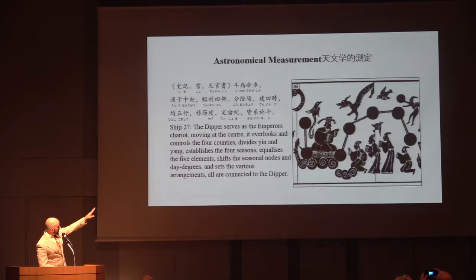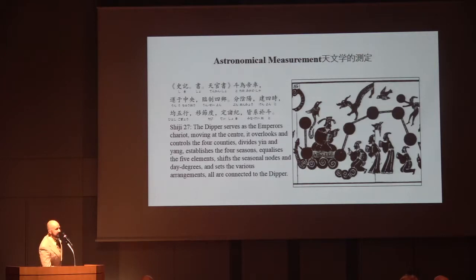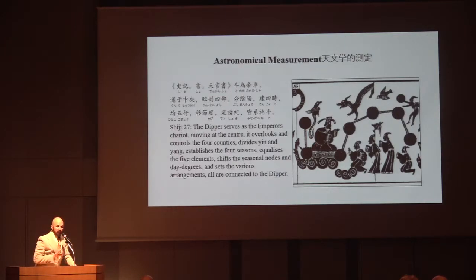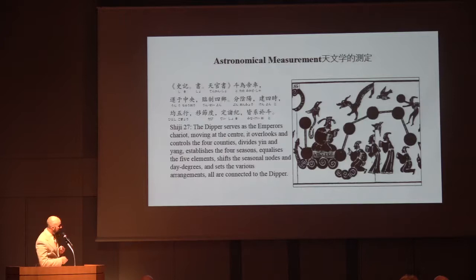Here we have the image of the dipper as the celestial chariot: 'The dipper serves as the emperor's chariot. Moving at the centre, it overlooks and controls the four counties, divides yin and yang, establishes the four seasons, equalises the five elements, shifts the seasonal nodes — the jiechi — and the day degrees — the du — and sets the various arrangements. All are connected to the dipper.' If there's one constellation you should learn if you're practising feng shui, it is the Northern Dipper. It is the single most important constellation in feng shui, appearing as a giant clock in the sky.